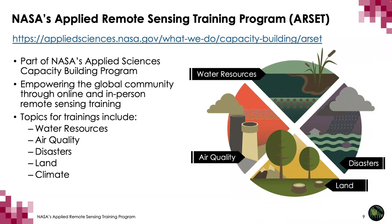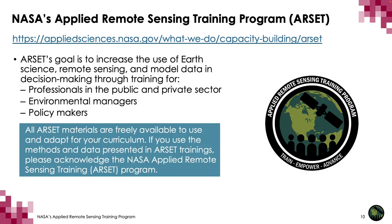For those unfamiliar with the Applied Remote Sensing Training Program, or ARSET, it is part of NASA's Applied Sciences Capacity Building Program. ARSET provides accessible, relevant, and cost-free training on remote sensing satellites, sensors, methods, tools, and applications. Trainings are offered online and in person for beginners and advanced practitioners alike, covering a range of data sets and tools and their application to air quality, agriculture, disasters, land, and water resources management. ARSET's goal is to increase the use of earth science remote sensing and model data in decision making through training for professionals in the public and private sector, environmental managers, and policy makers.